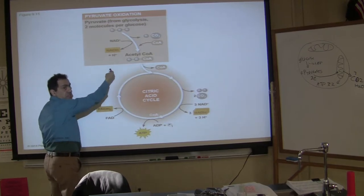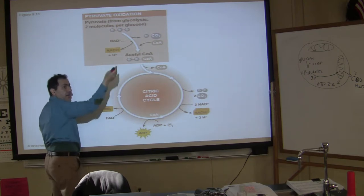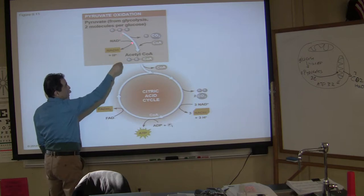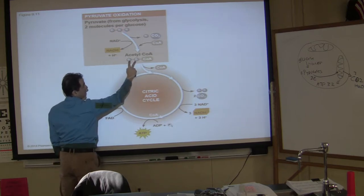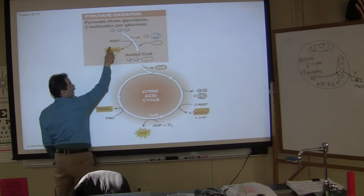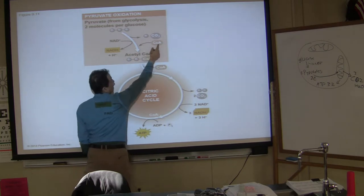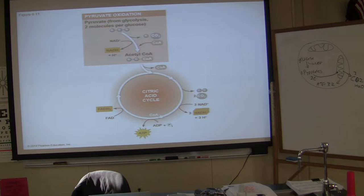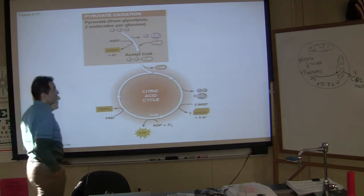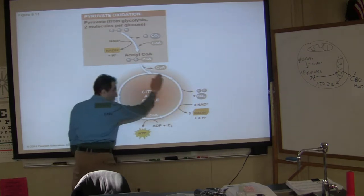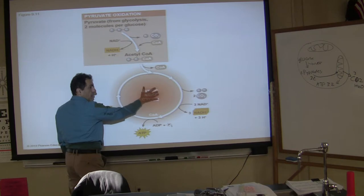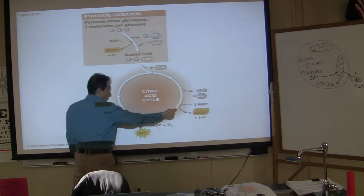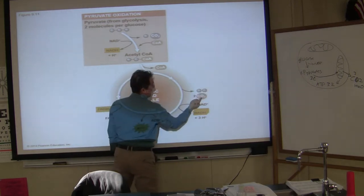The acetyl-CoA goes through the cycle, and eventually all of those two carbons are lost as carbon dioxide. To make the long story short, acetyl-CoA goes through the cycle, and you should know what happens — eventually, those carbons are lost as CO2.